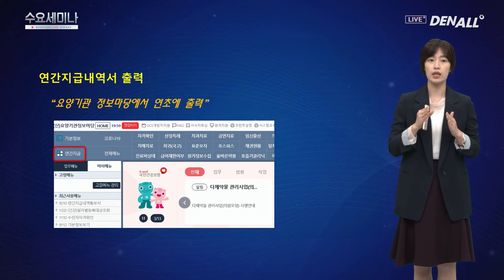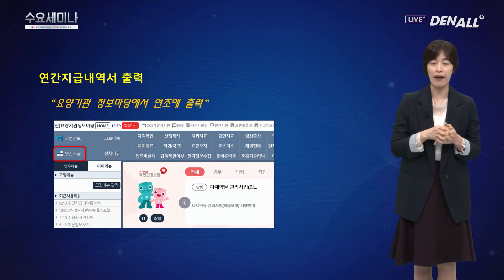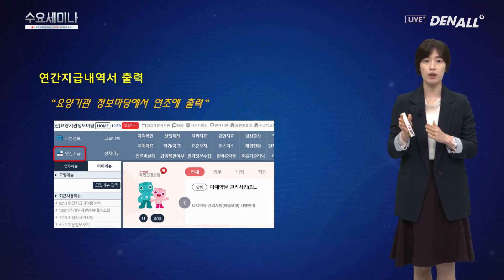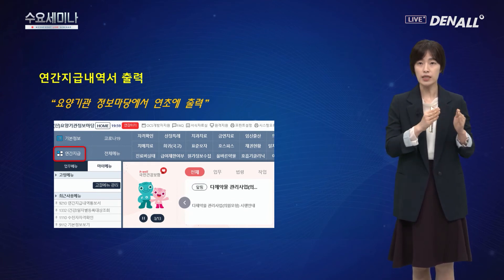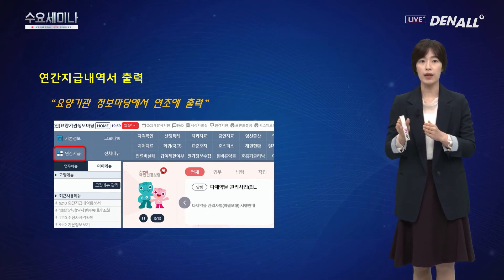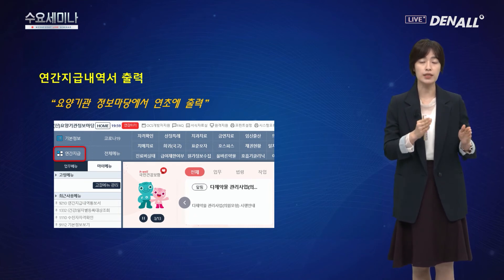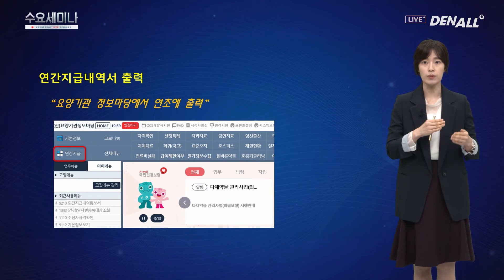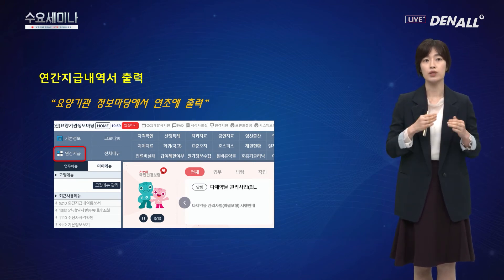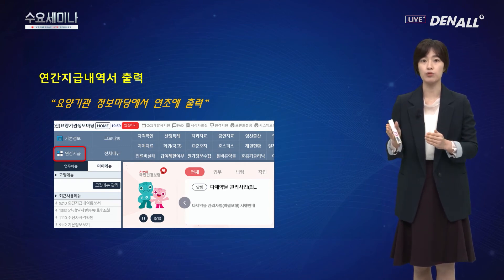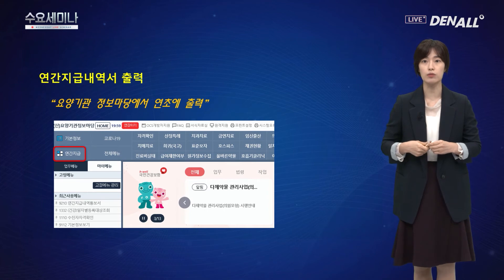연간지급 내역서에서 확인이 안 되거나 다른 월의 지급 내역을 확인하고 싶으시면, 의료급여나 요양급여 메뉴로 들어가신 다음에 지급 내역을 기간별로 검색하실 수 있습니다. 기간별로 검색해서 출력하셔도 동일한 효력을 가지니까 기억해 두시면 좋겠습니다.